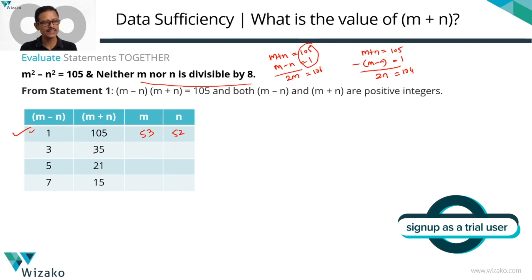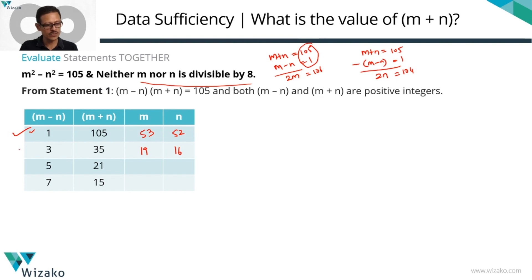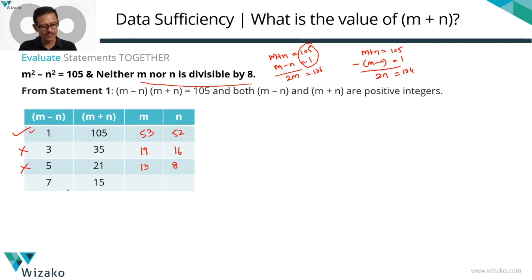For case 2: m plus n = 35 and m minus n = 3. Adding gives 2m = 38, so m = 19. Subtracting gives 35 minus 3 = 32 divided by 2, so n = 16. Since 16 is divisible by 8, this does not satisfy statement 2 — not a possible value. For case 3: m plus n = 21 and m minus n = 5. Adding gives 2m = 26, so m = 13. Subtracting gives 21 minus 5 = 16 divided by 2, so n = 8. Since 8 is divisible by 8, this also does not satisfy statement 2.